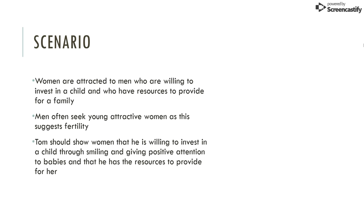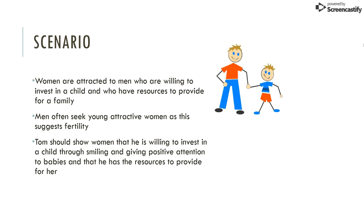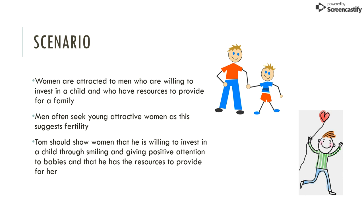You can tell Tom that he can attract women by interacting with children positively and showing that he has the resources and money to provide for them. His older friends are attracting the younger women because they have the resources to protect and provide for the child, and perhaps because they have also shown positive interactions with babies while they were dating.